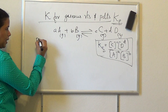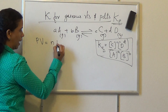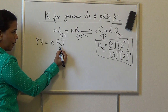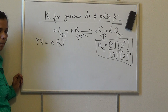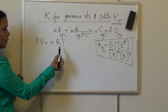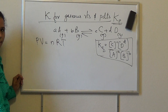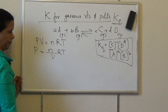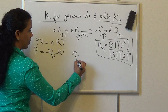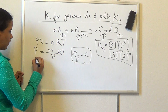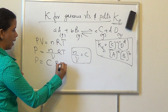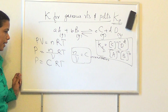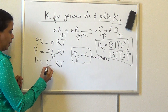According to the ideal gas equation PV = nRT, where P is pressure, V is volume, n is number of moles, R is the universal gas constant, and T is temperature, we can write pressure P equals (n/V) times RT. Since n/V is concentration C, this becomes P = CRT.